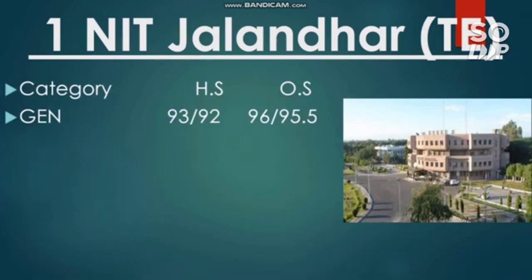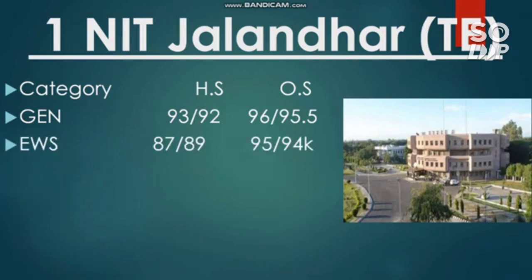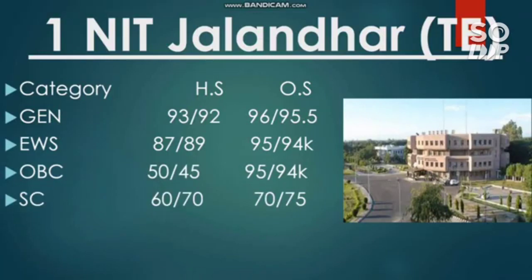For NIT Jalandhar Textile Engineering, focusing on other state cutoffs: EWS requires 95 and 94 percentile. OBC also requires 95 and 94 percentile. SC requires 70 and 75 percentile. ST requires 84 and 80 percentile. This helps estimate which NITs you can target based on your percentile.